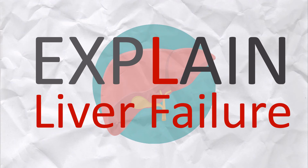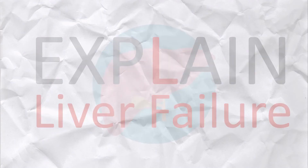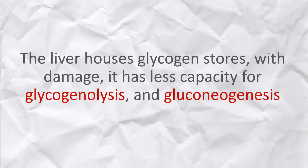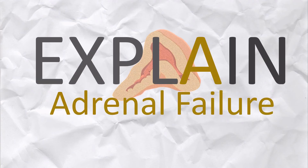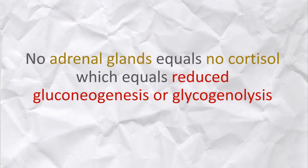L is for liver failure. The liver actually houses glycogen stores, so when it is damaged, it has less capacity for glycogenolysis and gluconeogenesis. A is for adrenal failure. Since cortisol comes from the adrenal glands, no adrenal glands means no cortisol, which means reduced gluconeogenesis or glycogenolysis.